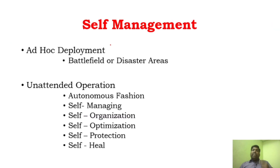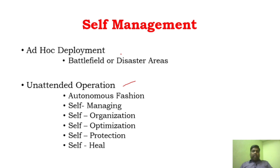The second important challenge is self-management — the ability to manage itself. In self-management, we speak about ad hoc deployment and unattended operation. Ad hoc networks are networks created on demand without any rules and regulation. For example, four friends can create a network using share-it to share files and photos. That is called an ad hoc network — it can be cell phones or laptops in any combination. It is called ad hoc because there is no infrastructure and no rules and regulation.